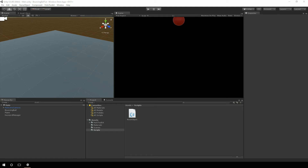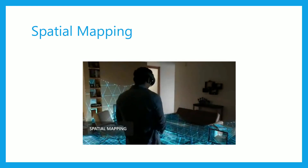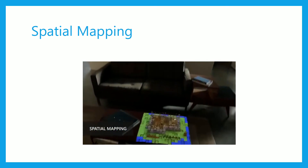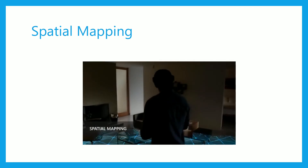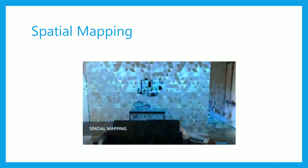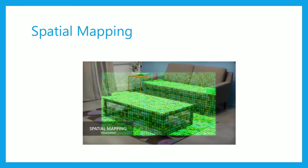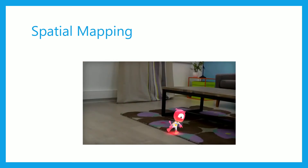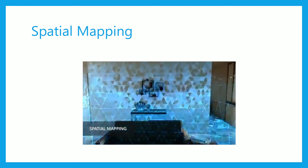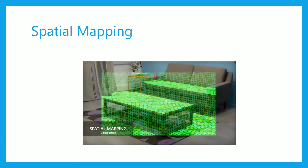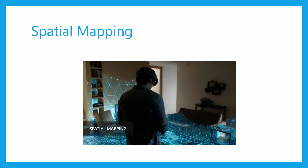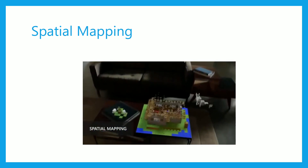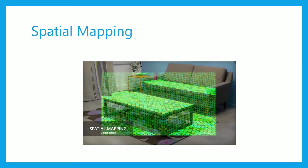So here we are in part four, and what we're going to do today is add in spatial mapping. Spatial mapping is the process that HoloLens uses to map its surroundings. It is constantly scanning and checking based off its depth cameras how far away things are, so it can determine that an object is, say, three feet in front of you. It builds up a triangle mesh based off of what it's seeing and creates a 3D object that's constantly being updated based off what it's seeing in the real world.